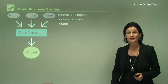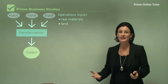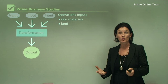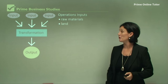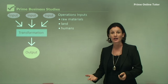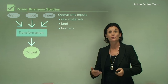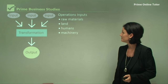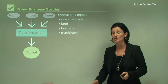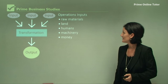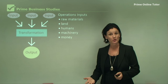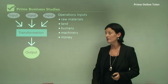Land — every operation needs a factory or an office to produce their product. Humans, which is the labour — the people who are going to produce the product. Machinery, which can also include technology. Money — we also use the word capital to define money.